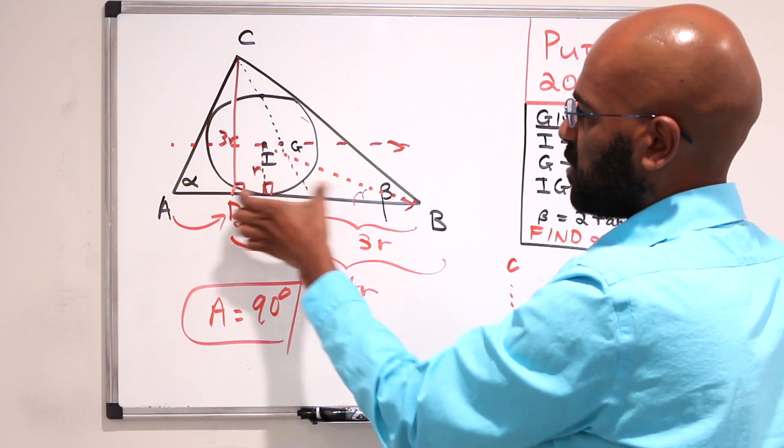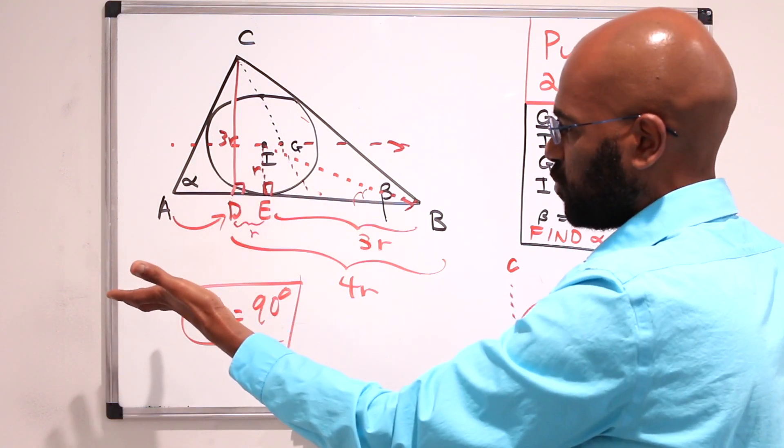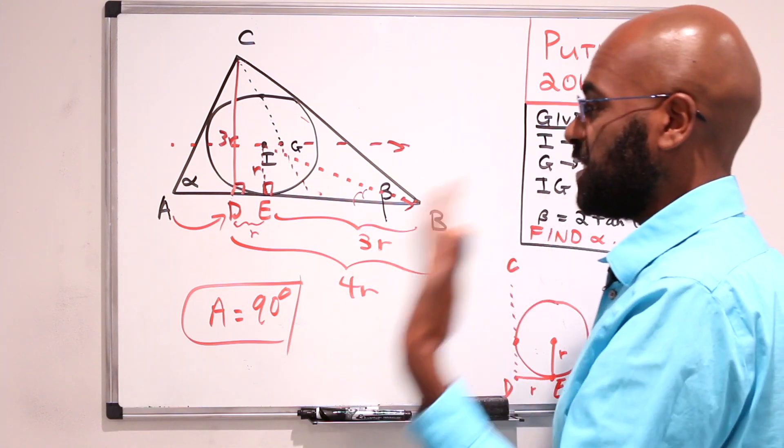The reason being, it splits into two right angle triangles that'll help us to figure out what alpha is using trigonometry. That's what we thought at face value.